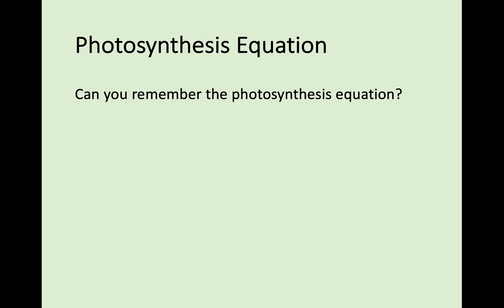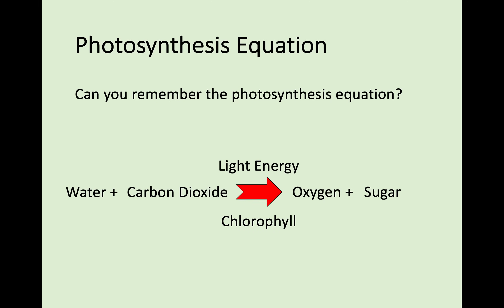Hopefully before you started National 5, you came across the basic photosynthesis equation — where water and carbon dioxide are taken into the plant, and through light energy and chlorophyll, the plant produces oxygen and sugar. Oxygen is released so we can breathe it in, and sugar is needed for the plant to have energy, to grow, and to survive. Although this is correct, we have to look into it in a bit more detail in National 5.